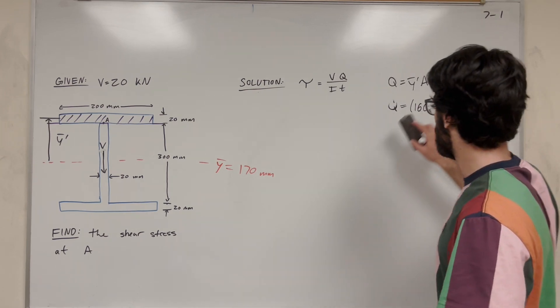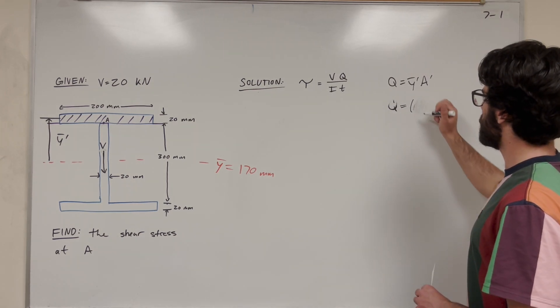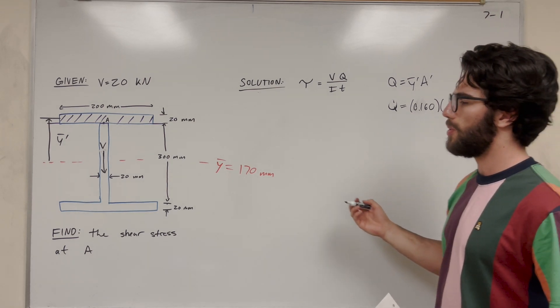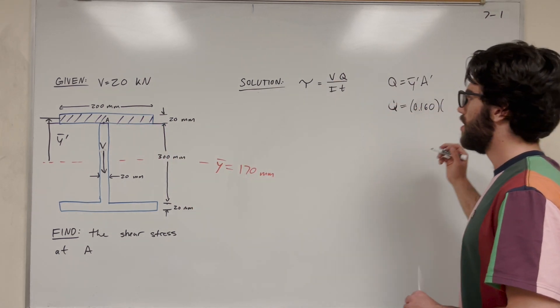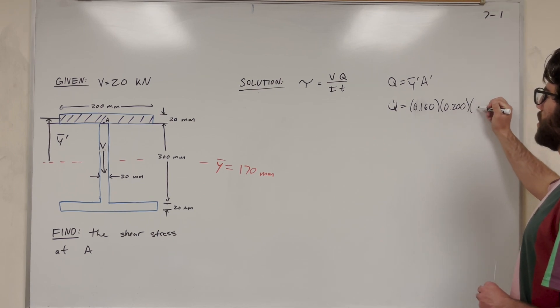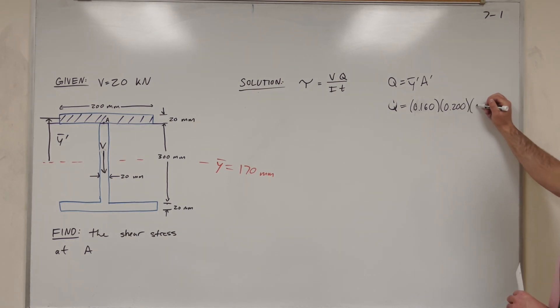And so let's convert that to meters first of all, 0.16 meters. And then what's area? So we're looking at the area of this rectangle. The base of it is 200 millimeters, and then 0.02 meters for the height.